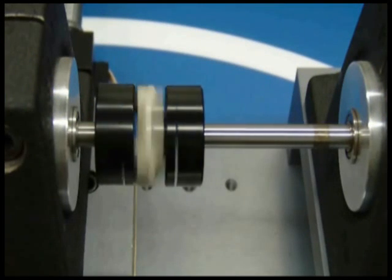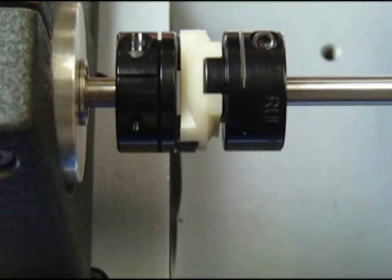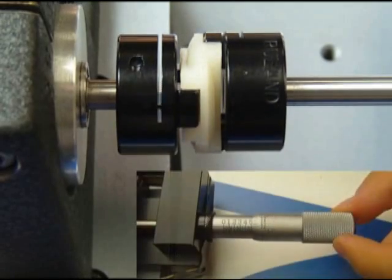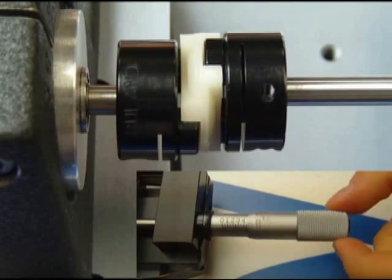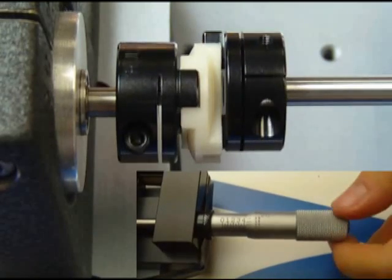The Oldham Coupling is a three-piece design comprised of two hubs with drive tenons pressed fit onto a center disc. During operation, the center disc slides on the tenons of the hub to accommodate parallel misalignment with amounts up to 10% of the outside diameter.